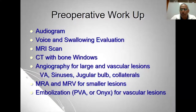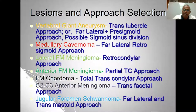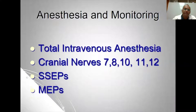Preoperative workup is fairly standard, but special attention is needed for the anatomy of arteries and veins in relation to the extreme lateral approach. This can be done by CT angiography and CT venography, or cerebral angiography especially if embolization is planned. For vascular lesions, embolization is performed when safe. Cases to be covered include vertebral artery aneurysms, medullary cavernoma, foramen magnum meningioma located laterally or anteriorly, and jugular foramen schwannoma — each requiring different approaches.